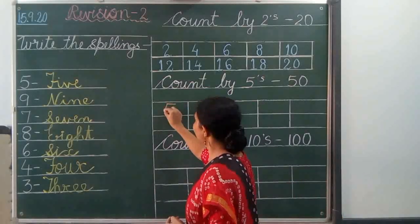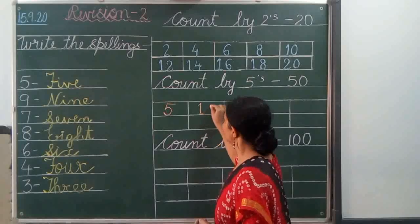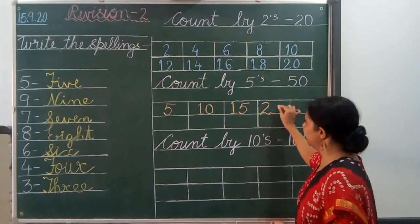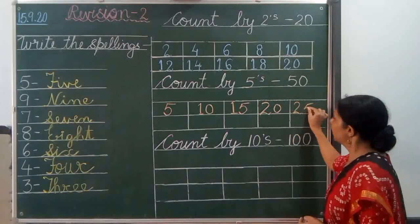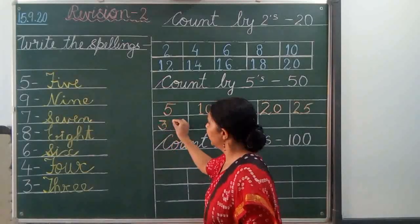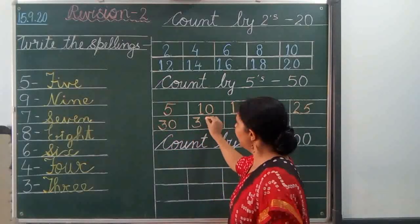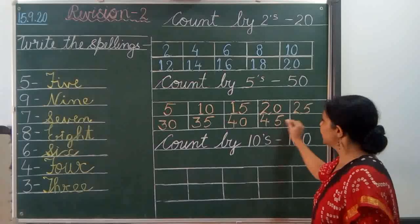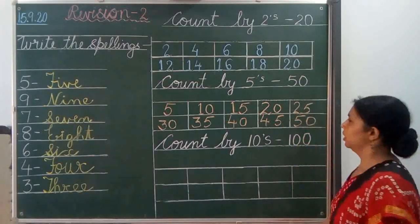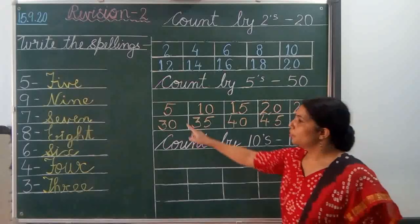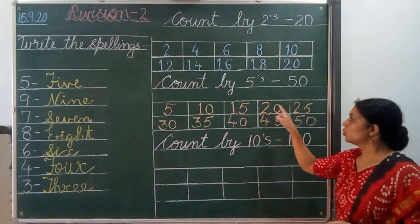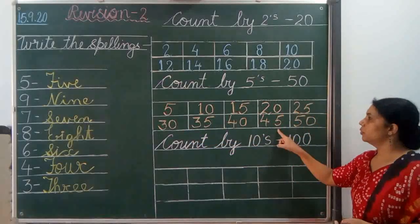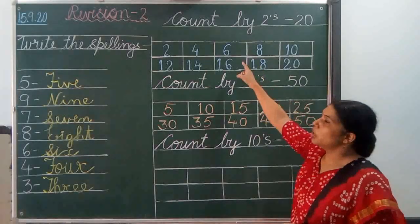Write down: 5, 10, 15, 40, 45, and last is 50. Let's revise: 5, 10, 15, 20, 25, 30, 35, 40, 45 and 50. This is count by 5's 50.